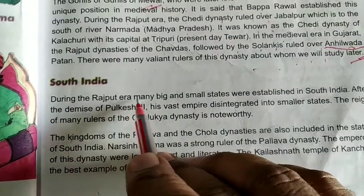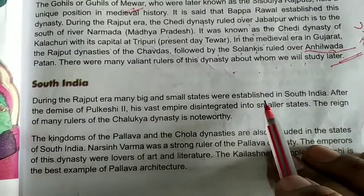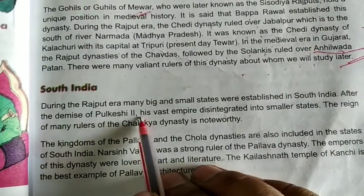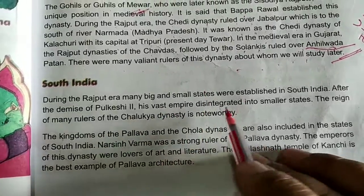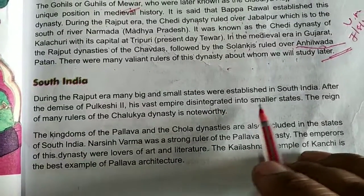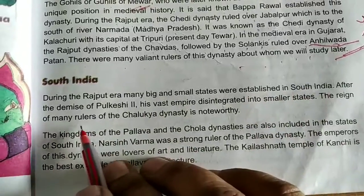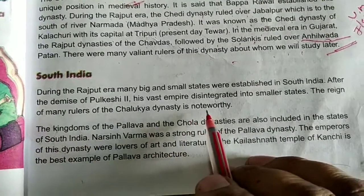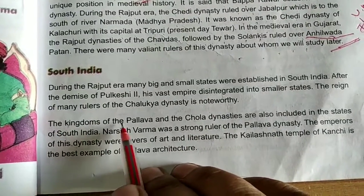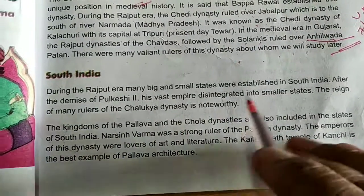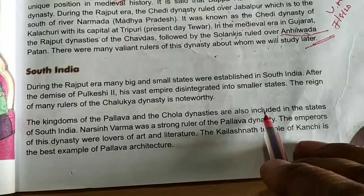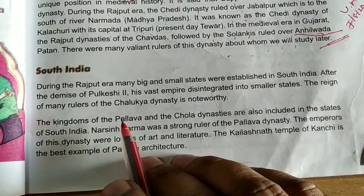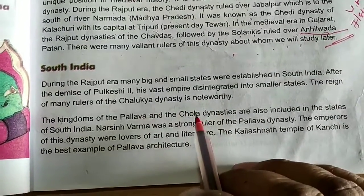During the Rajput era, many big and small states were established in South India. After the demise of Pulkeshi II, his vast empire disintegrated into small states. The reign of many rulers of the Chalukya dynasty is noteworthy. The kingdoms of the Pallava and the Chola dynasties are also included in the states of South India.